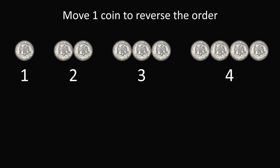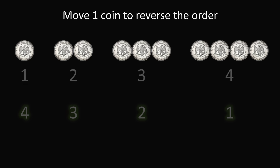You need to move just one coin to reverse the order. That means we want four coins on the left, then three coins next to it, then two coins next to it, and finally one coin on the right. At first, this seems impossible — how can you move one coin to reverse the order?